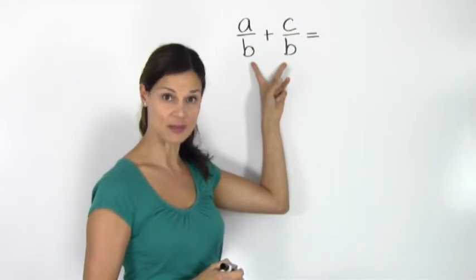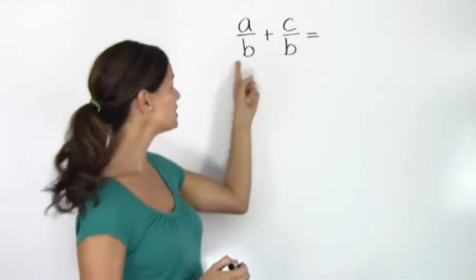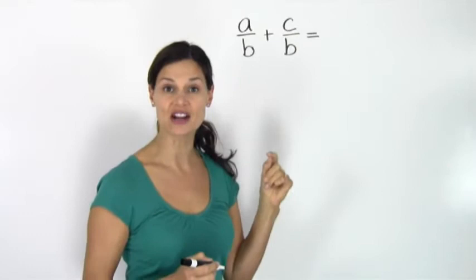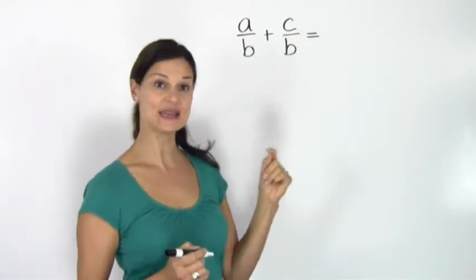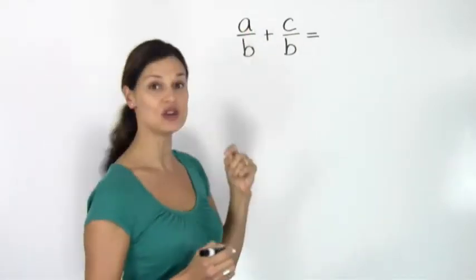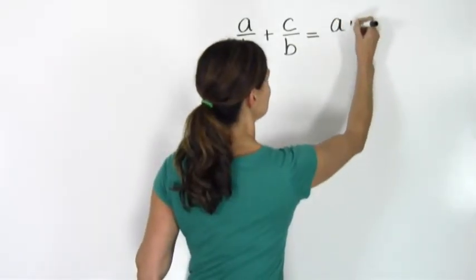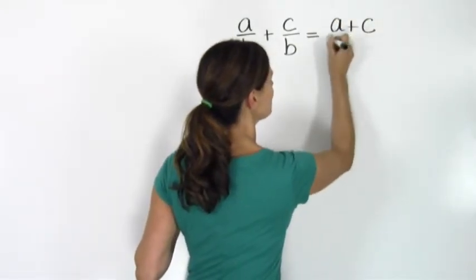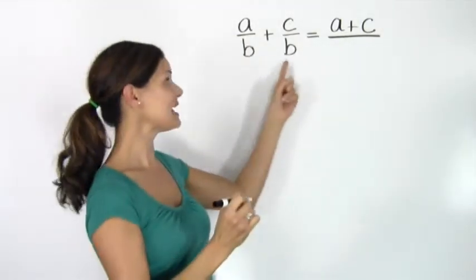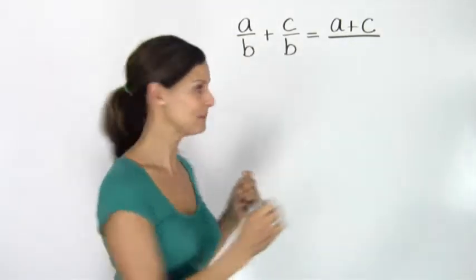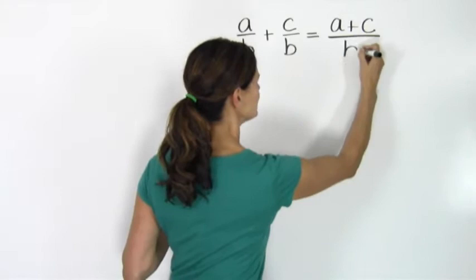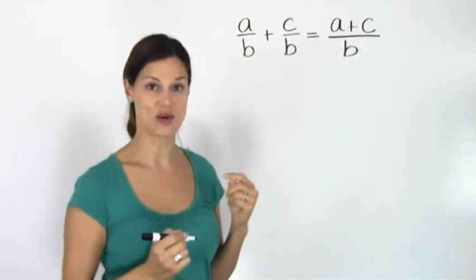These have a common denominator of b. And so what I do to add these two fractions together is I simply add the two numerators together. So I'll have a plus c in my numerator, and I keep the denominator the same. a plus c over b is going to be my answer.